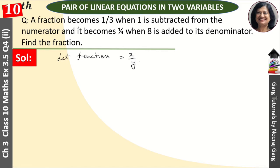The first condition is the fraction becomes 1 upon 3 when 1 is subtracted from the numerator. So, x minus 1 over y equals 1 by 3. And if we cross-multiply this, it will be 3x minus 3 is equal to y. That is our first equation.